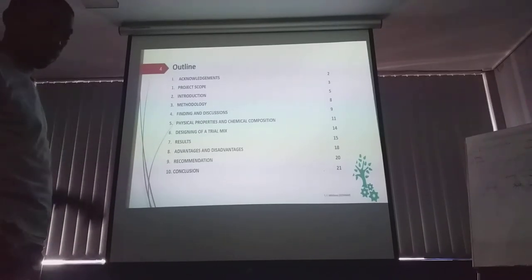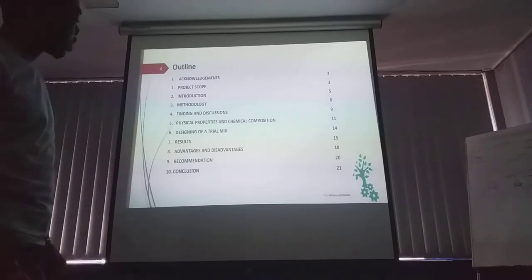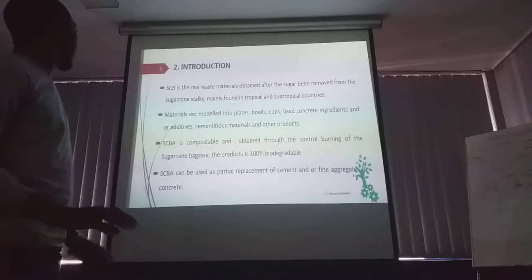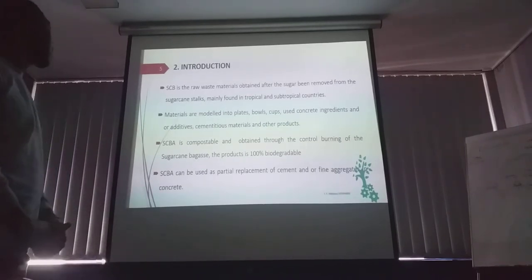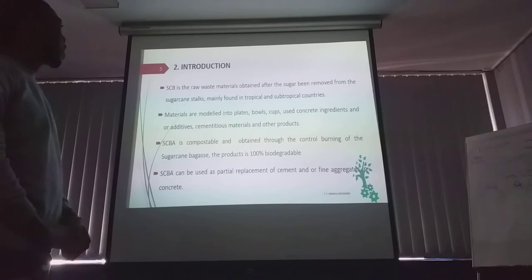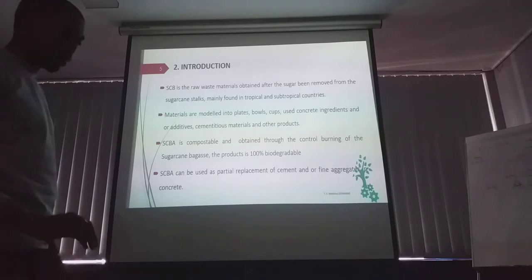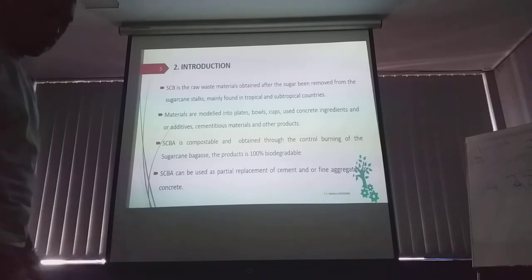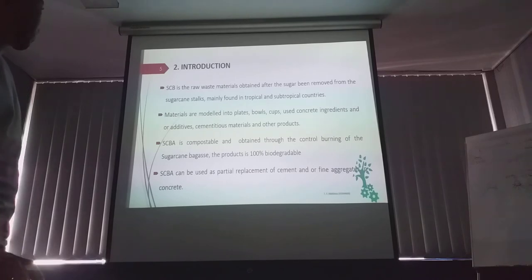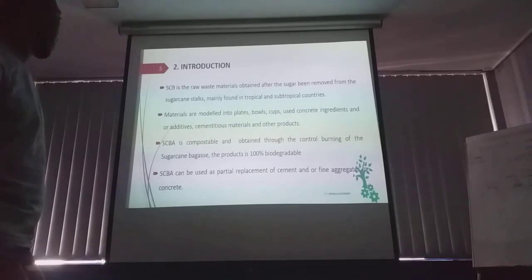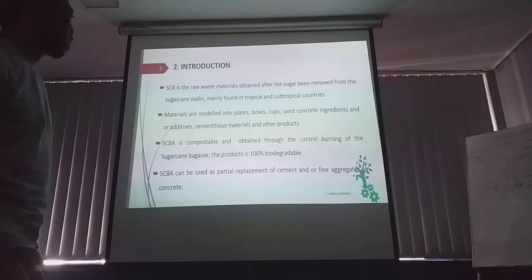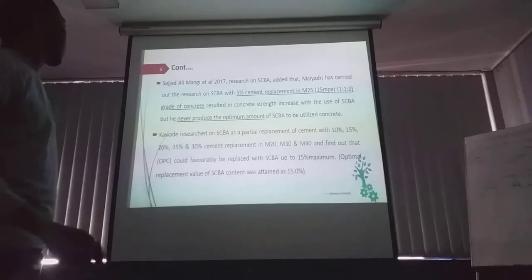These are the outlines of the presentations. In the introduction, sugarcane bagasse ash is a raw waste material obtained after the sugar has been removed from the sugarcane, mainly found in tropical and subtropical countries. It is 100% biodegradable and can potentially be used to replace cement and fine aggregates.